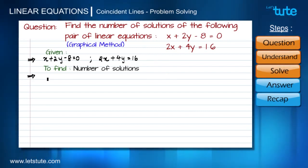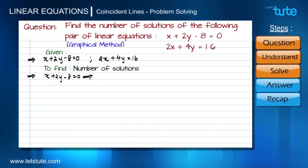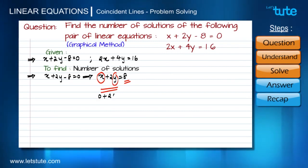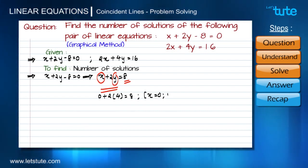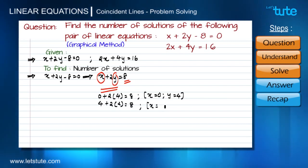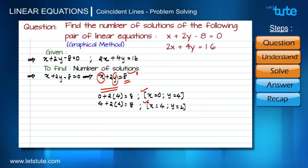Let us proceed to step two and start with the first equation. We can rewrite it as x plus 2y equals 8. For drawing the graph, I need two sets of values for x and y. Taking x as 0, y must be 4 so the left-hand side equals 8. That gives the first set: x=0, y=4. For the second set, taking x as 4, y must be 2 to get 8 on the right-hand side. So the second set is x=4, y=2.